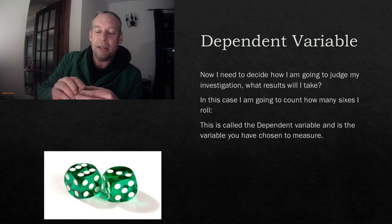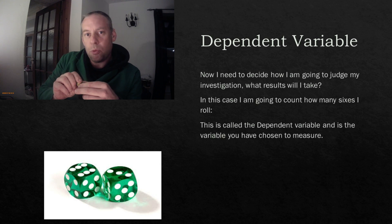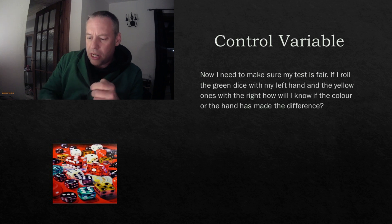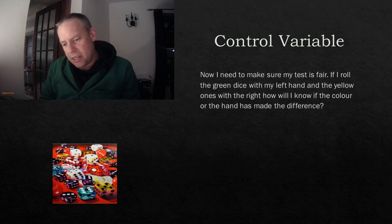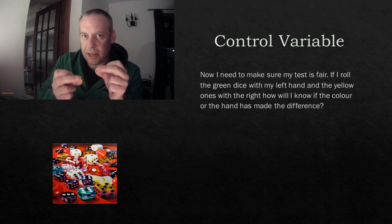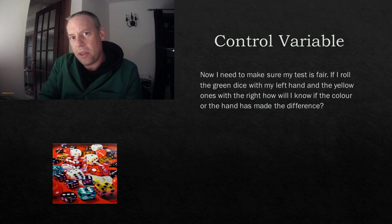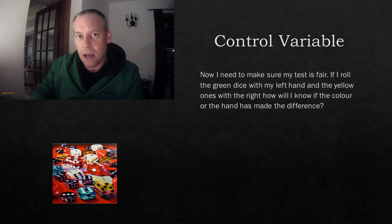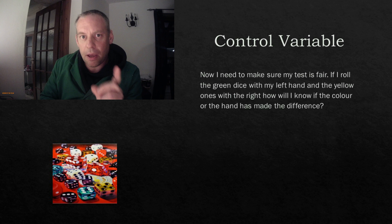So I have chosen what I'm going to investigate. I'm going to investigate whether green or yellow dice are going to give me better numbers of sixes. And I've worked out that I'm going to count the number of sixes. So I've worked my independent, dependent. Now what I need to do is work out how to keep my test fair. So it would be no good if I rolled all the yellow dice with my right hand and all the green dice with my left hand. Because I wouldn't know if it was the coloured dice that affected the sixes or whether it was my left and right hand that affected the number of sixes. So in order to keep it fair, to keep it valid, I need to make sure that I'm keeping everything the same apart from the independent variable that I've chosen to change.